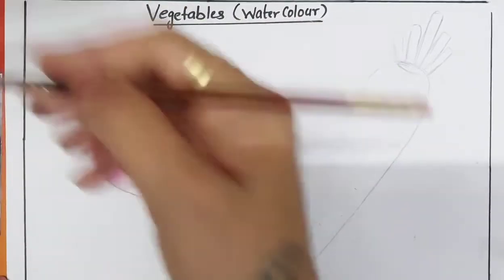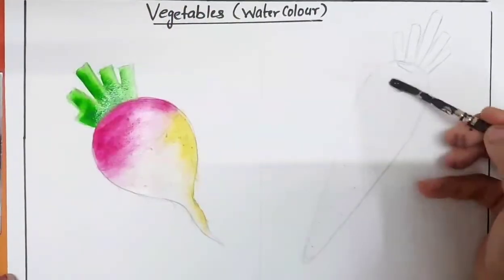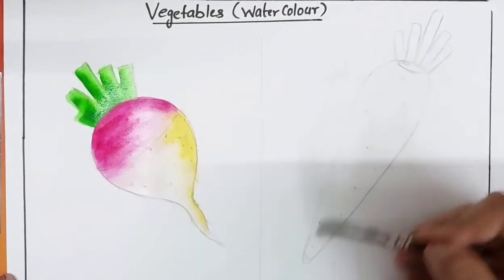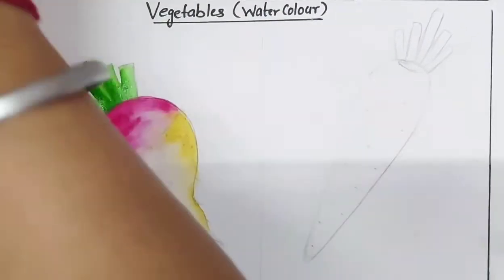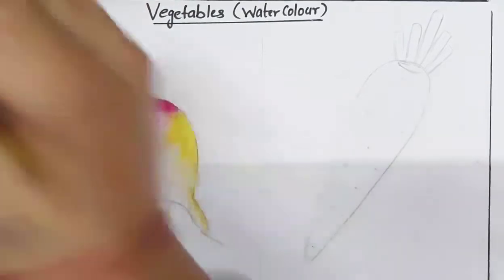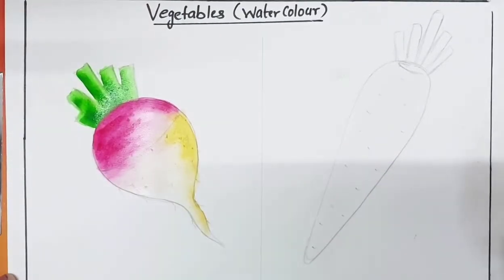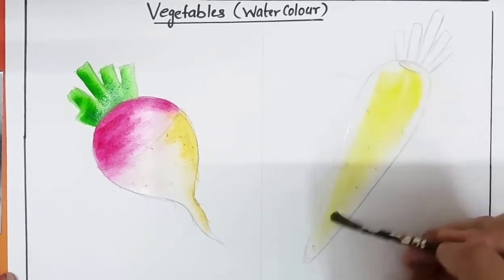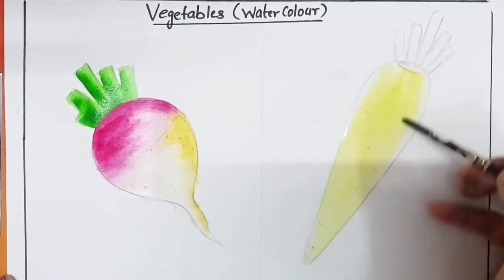Next vegetable, add some clean water. Here I am using yellow color for base and spread like this.